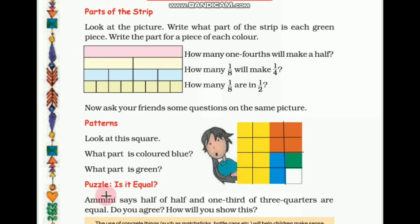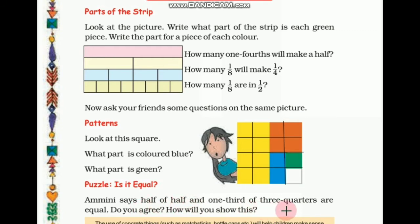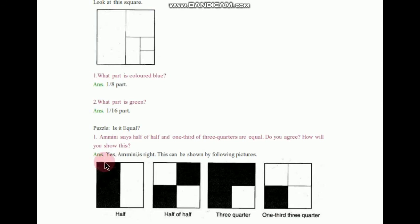Now here is a puzzle: is it equal? Amini says half of half and one third of three quarters are equal. Do you agree? How will you show this? Yes, I agree — half of half and one third of three quarters are equal. So let's show how these both are equal. Here is the solution: yes, Amini is right. This can be shown by the following picture.